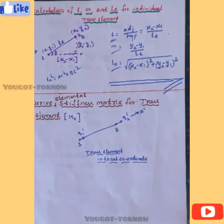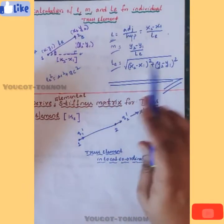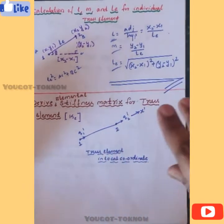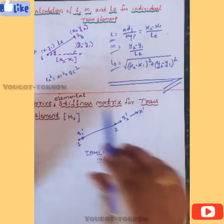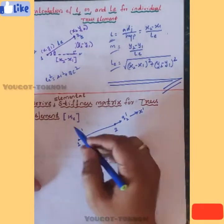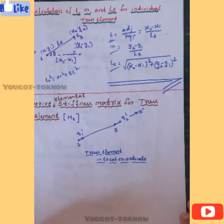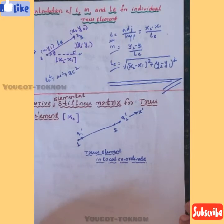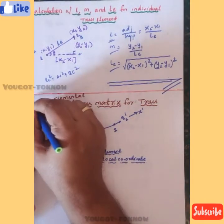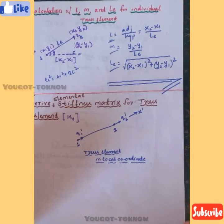Already we know how to calculate L, M, and L_e — up to that we have discussed. Now our next derivation is: derive the elemental stiffness matrix for a truss element, that is Ke. It is one of the very simple derivations and a most common question in examination.